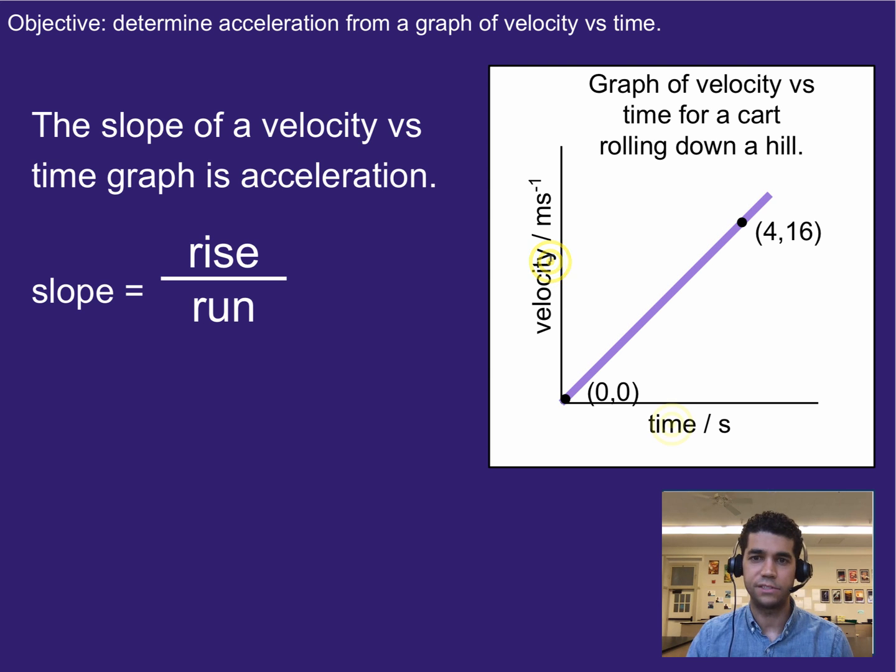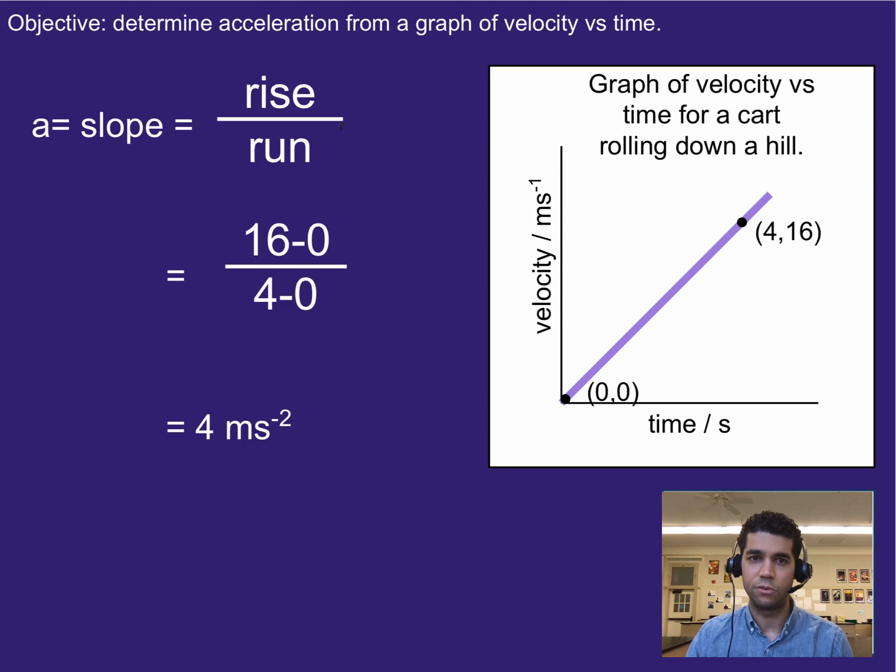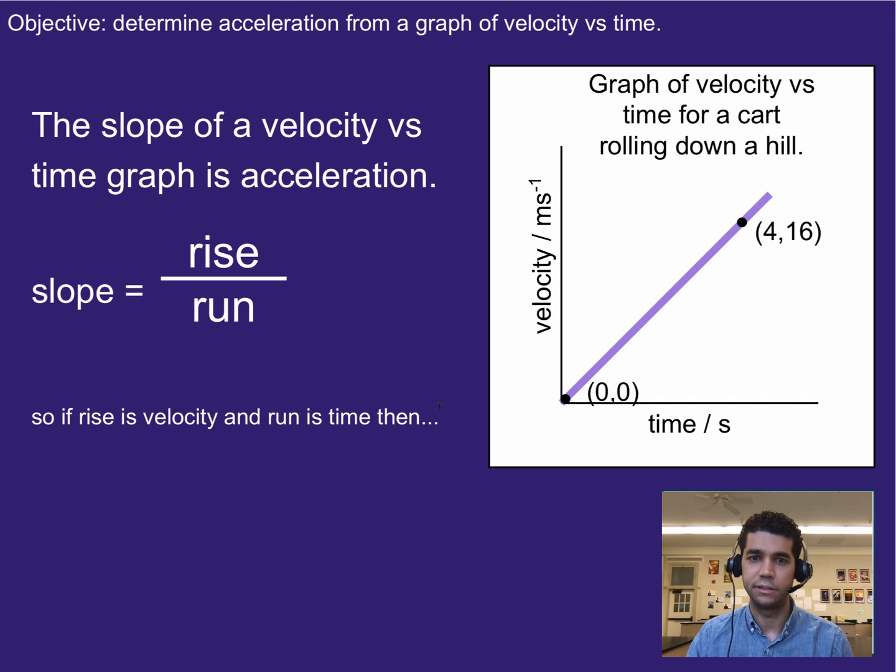then if we have this velocity versus time graph right here, we can calculate the rise, which would basically be the change in velocity, and the run, which would essentially be the change in time. And that gives us our slope, which is the acceleration.